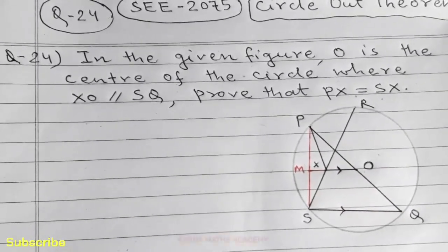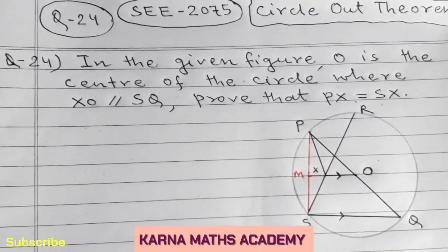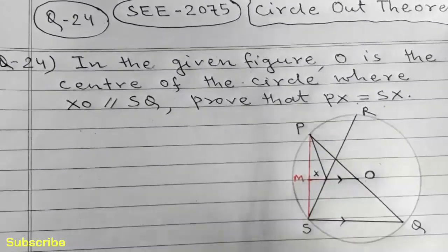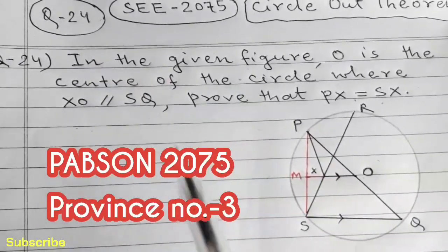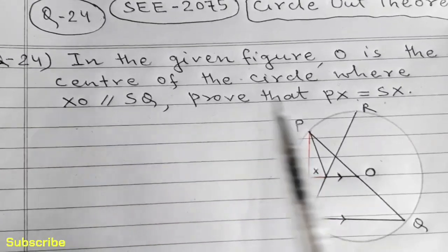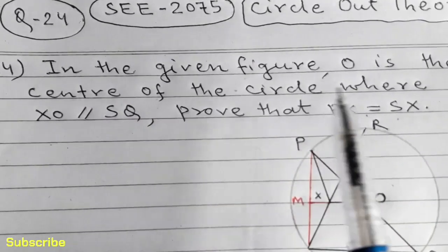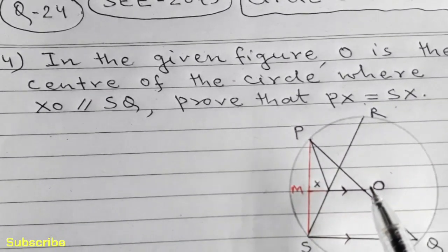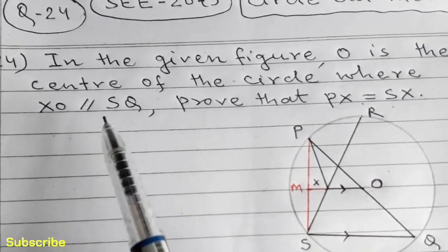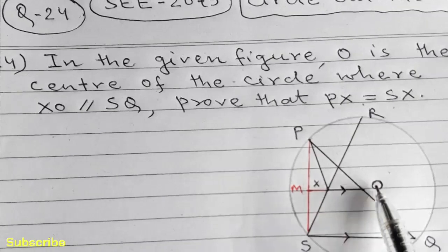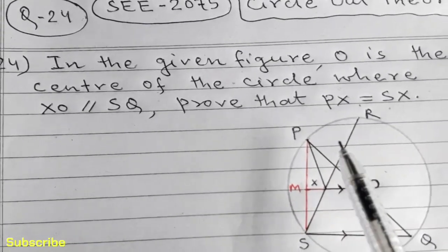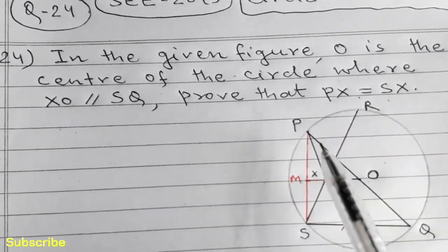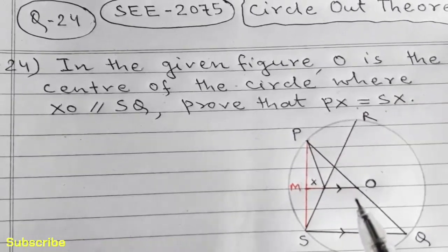Hello dear students, welcome to Corner Mass Academy. Today in this video we are going to prove one of the most important questions from circle theorems, which is asked in SE 2075 question number 24. In question number 24, O is the center of the circle where XO is parallel to SQ. We have to prove that PX is equal to SX.